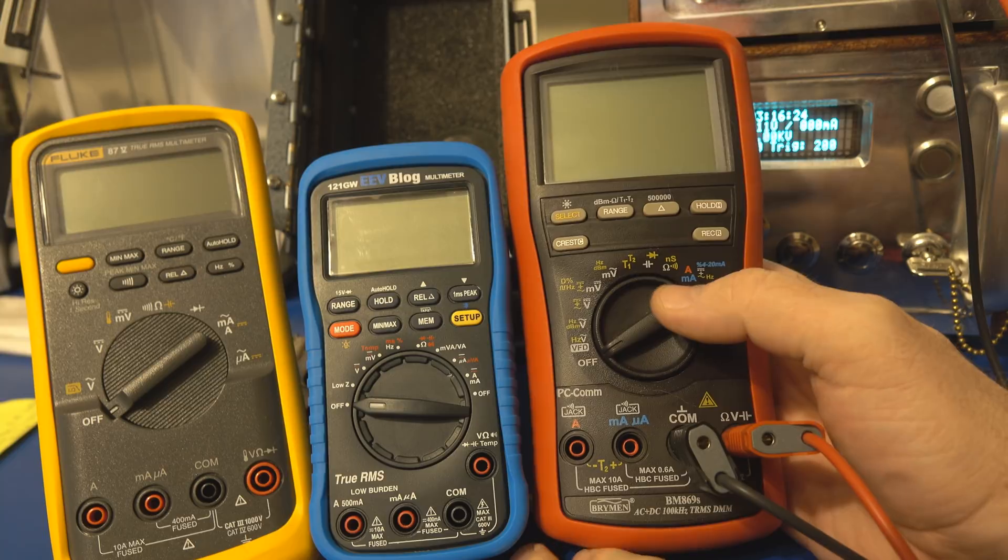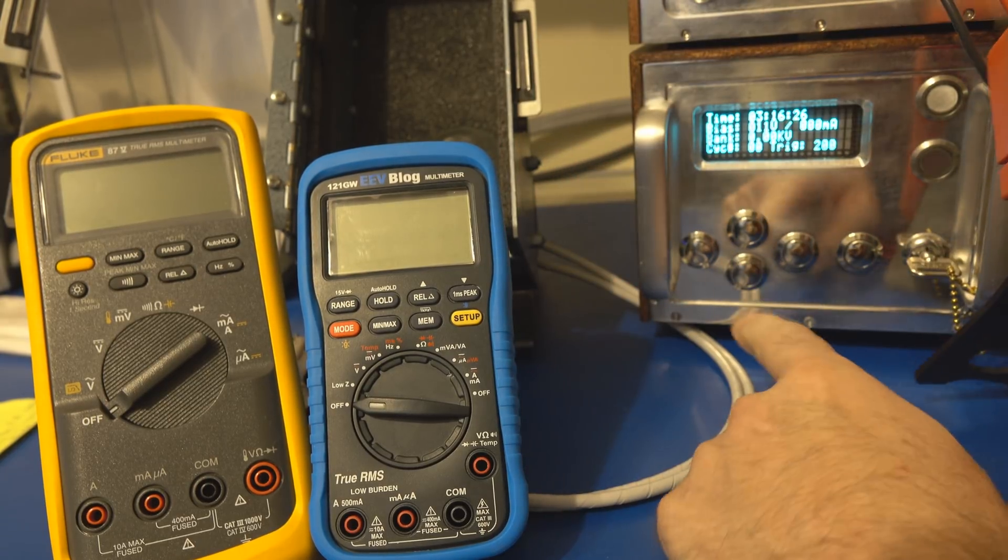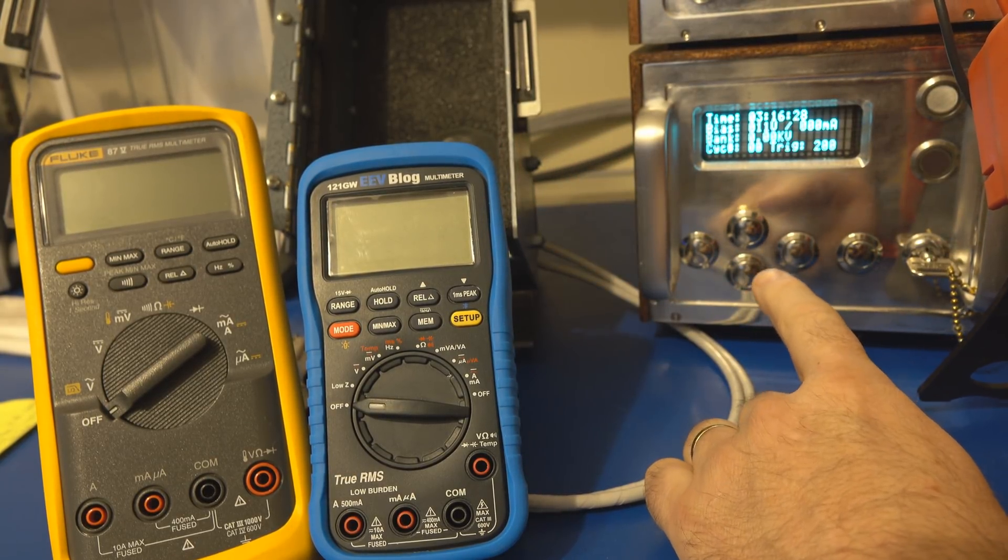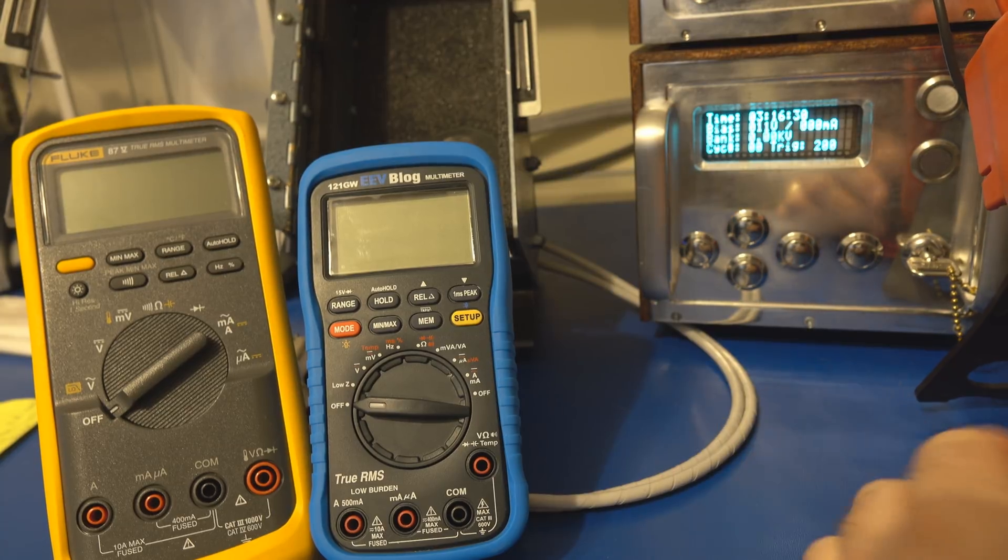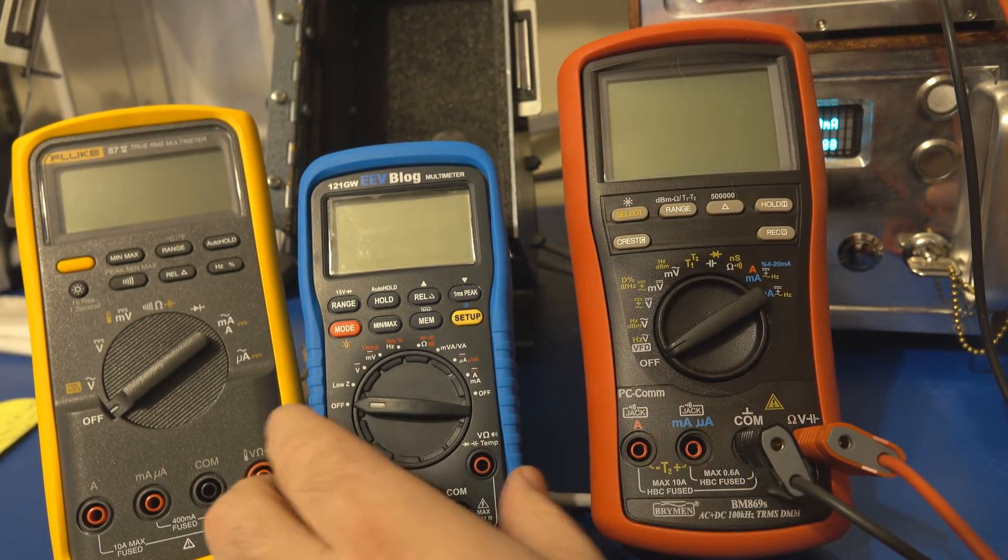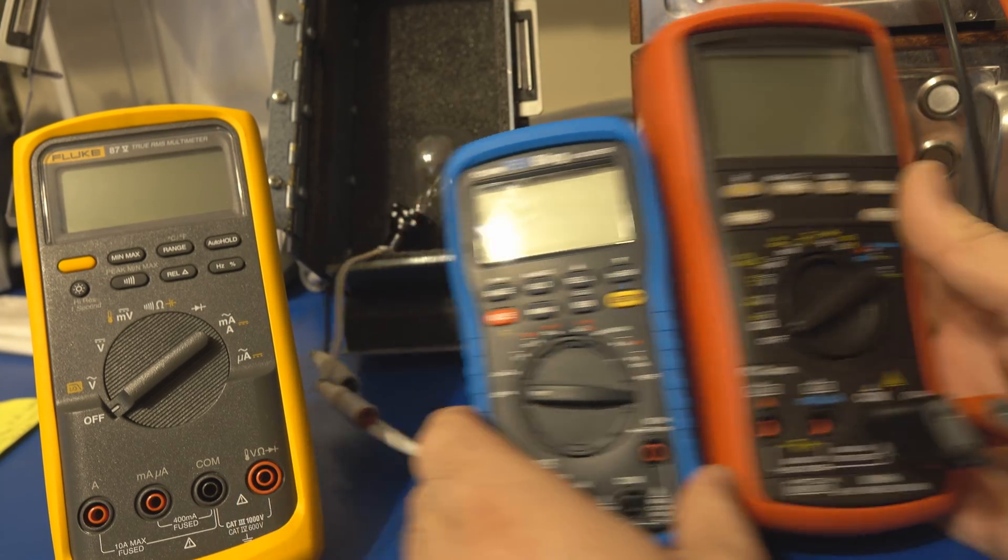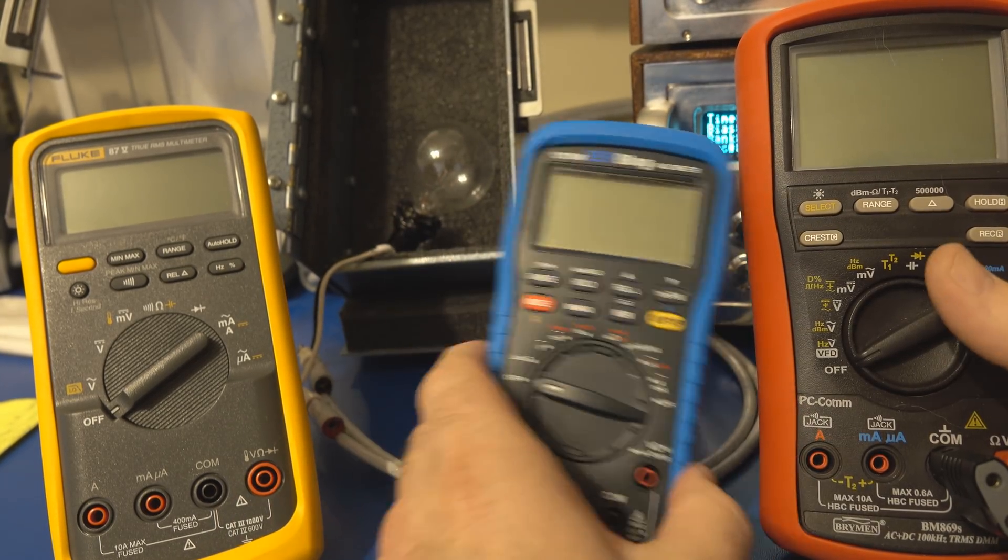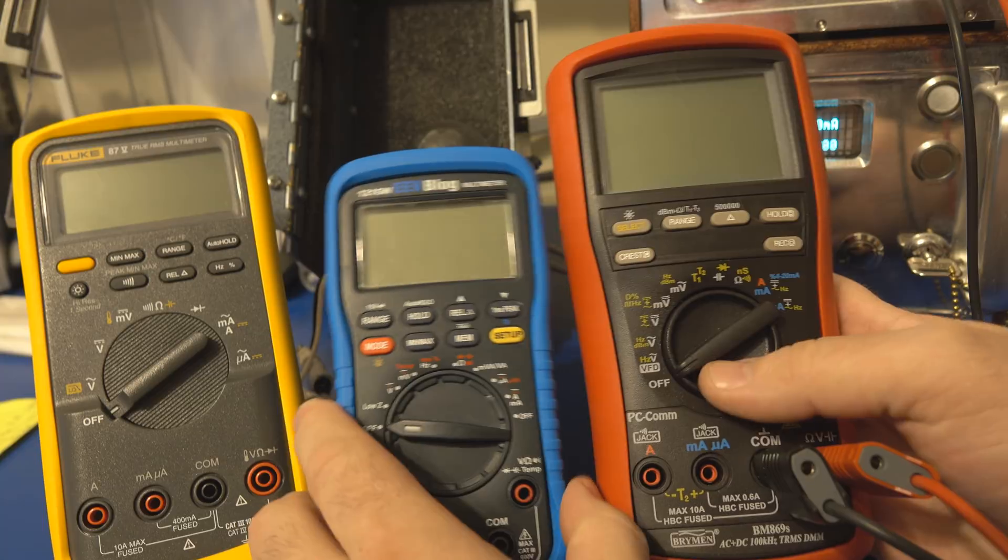But again I don't test at very high energy levels. This transient generator is only capable of putting out about 20 joules maximum. Hopefully repeating these tests with the light bulbs gives you some idea how much energy that actually is. Basically having this little light bulb survive, you would think that your multimeter would as well.